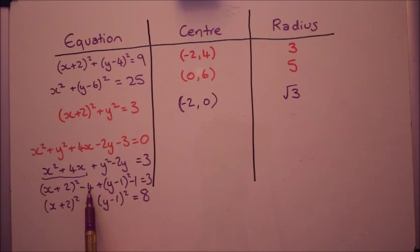And it's equal to 3. OK, lastly there, I just tied it up by taking the 4 and the 1 over to the other side. Well done if you got that right. Now we can pick out the center and the radius easily.